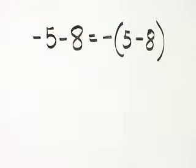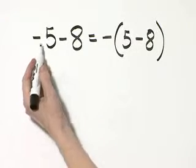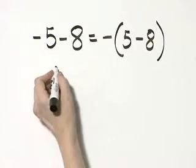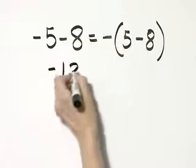To determine whether this statement is true or false, let's simplify each side of the statement. Here I have negative 5 minus 8, and negative 5 minus 8, that's negative 13.